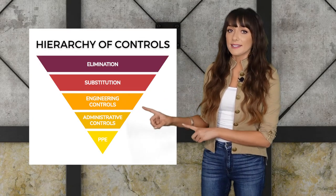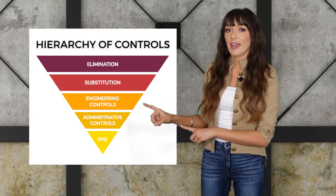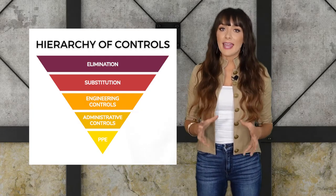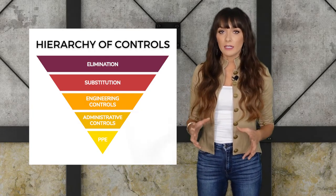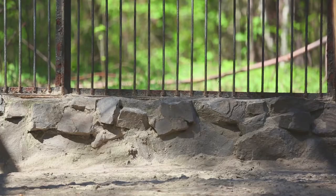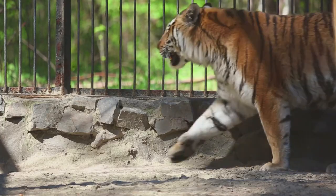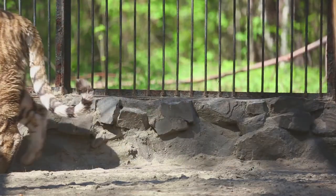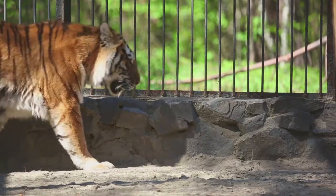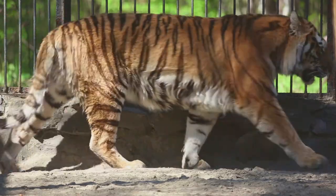Engineering controls isolate people from the hazard. Let's say you decide to keep the tiger. It's still a dangerous animal, so you plan to build a cage separating zookeepers and guests from the claws, teeth, and 35 mile per hour speed of the tiger. Overall, it's pretty effective.